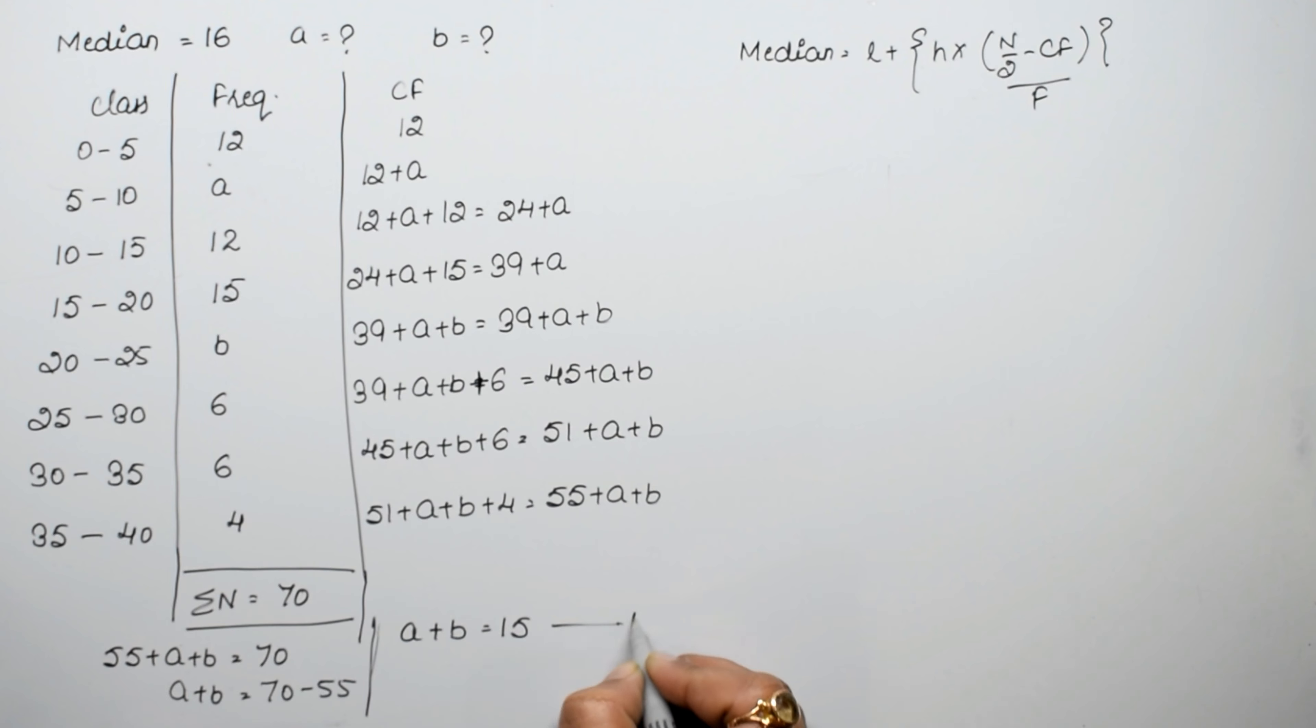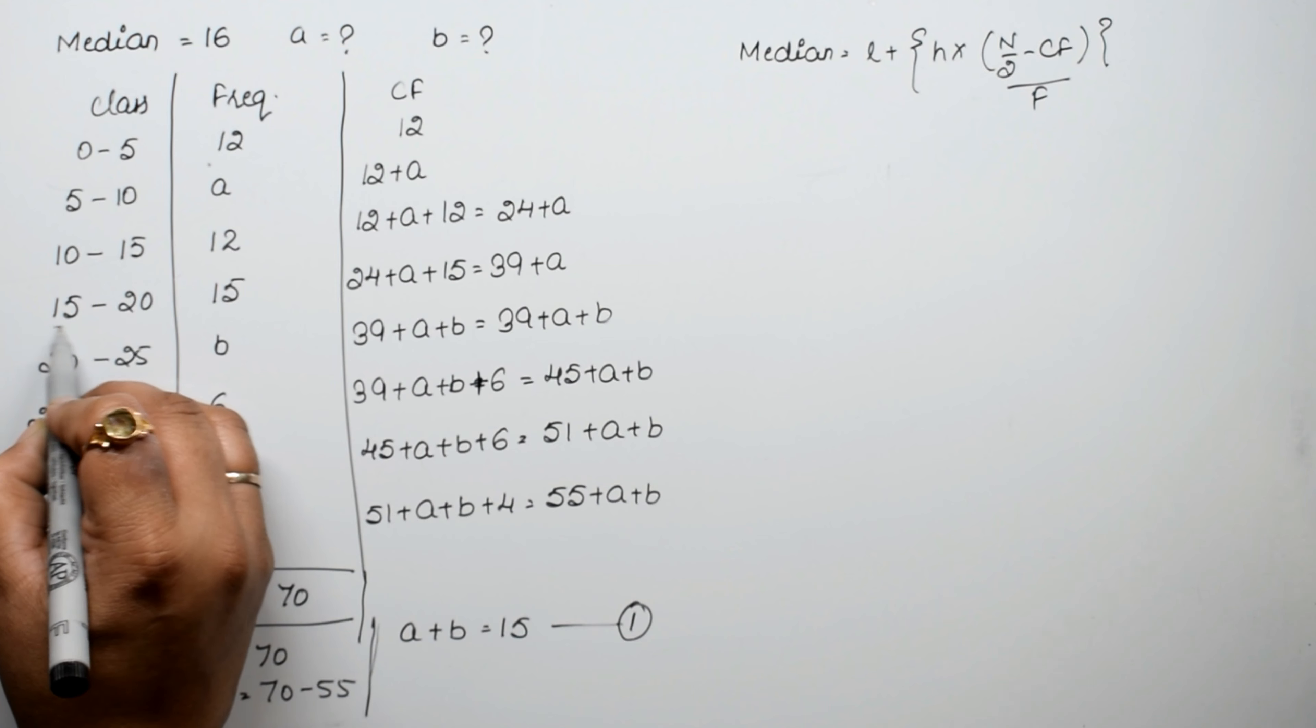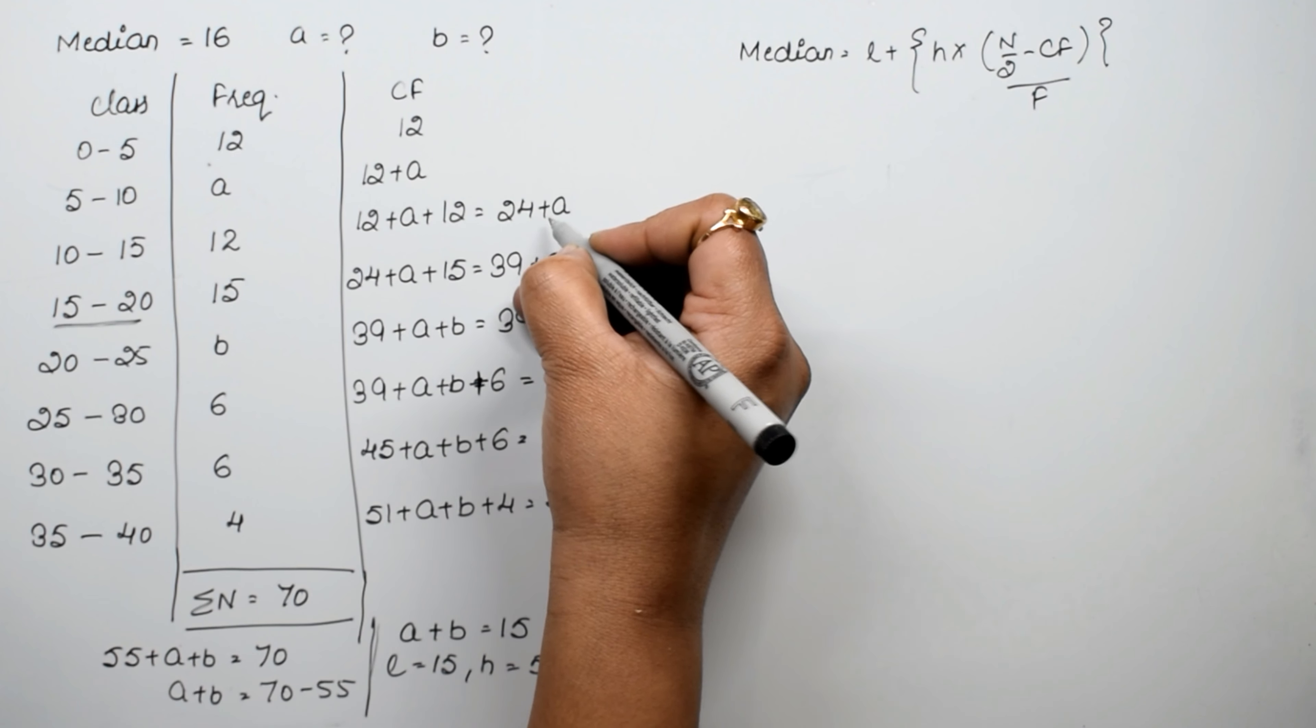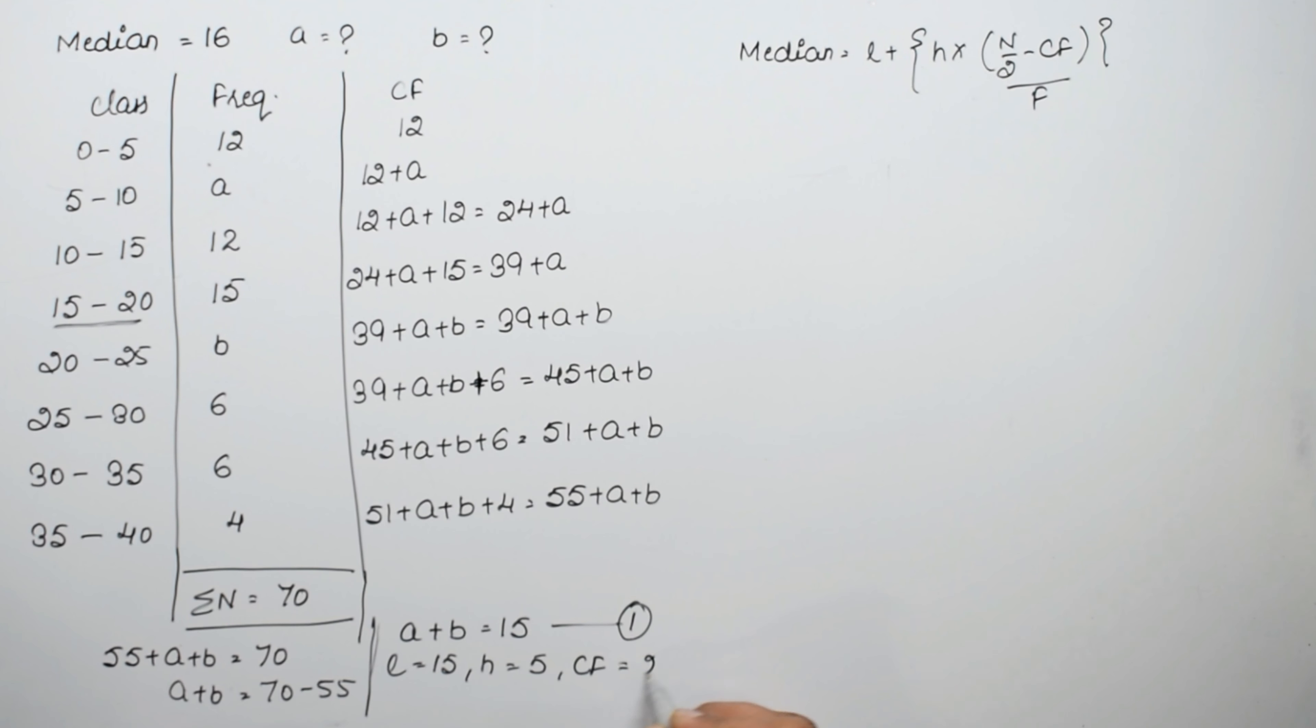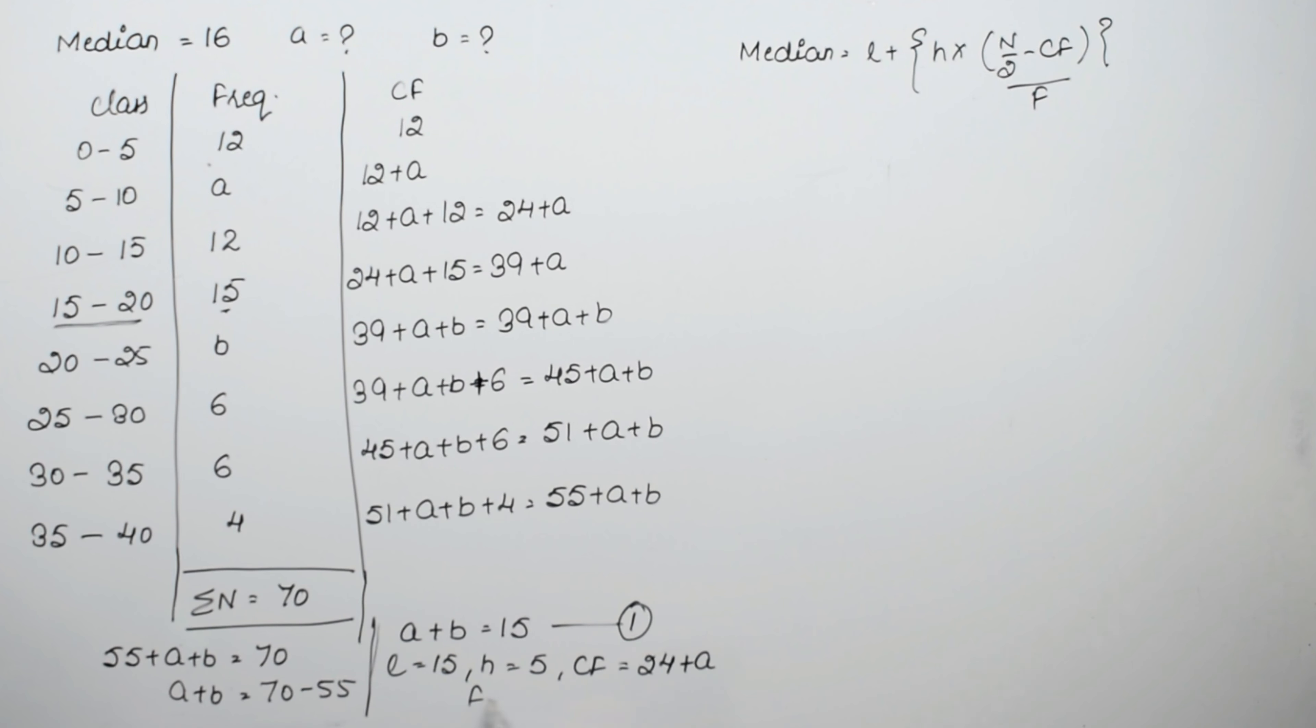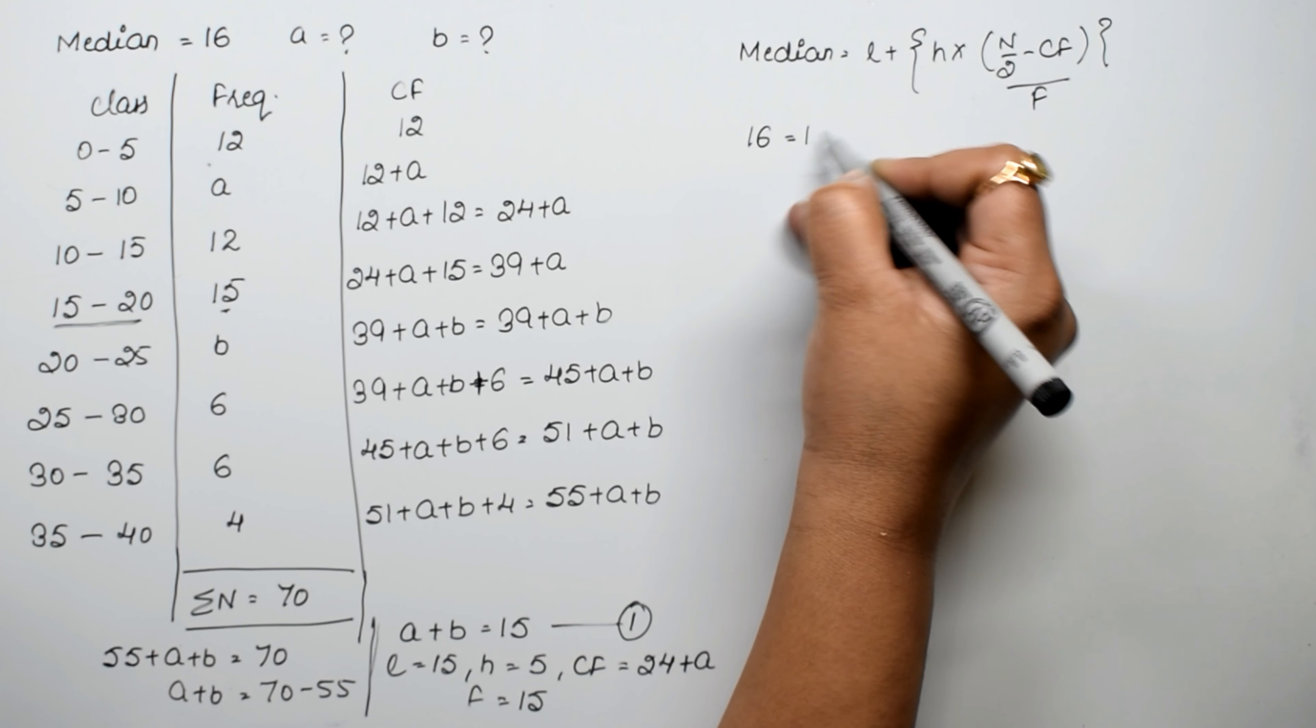Now for the second equation, we use median equals 16. The median class is 15 to 20, so L is 15 and H is 5. The cumulative frequency before this class is 24 plus A, and the frequency of the median class is 15.